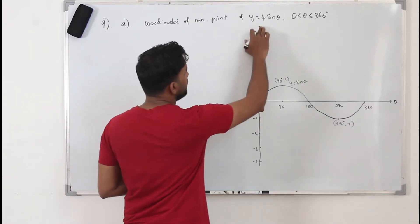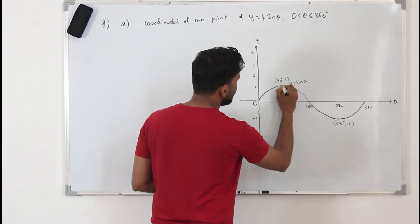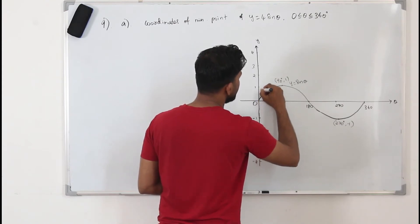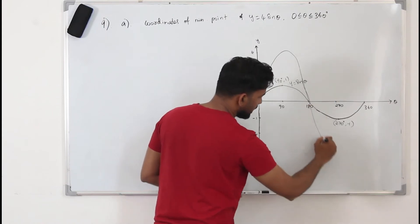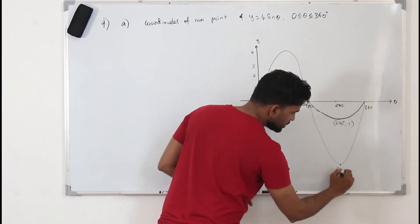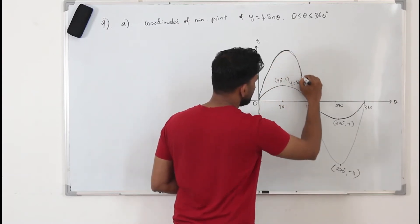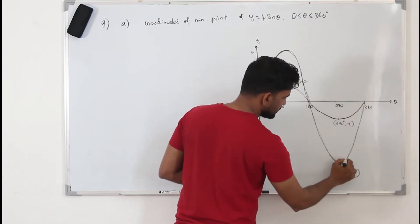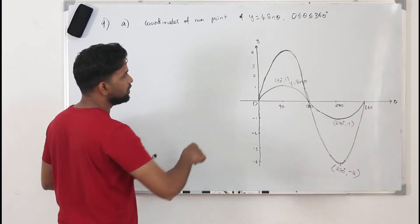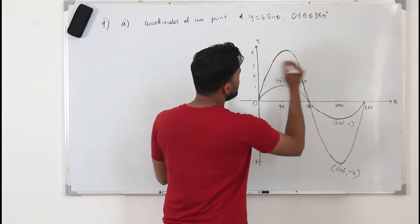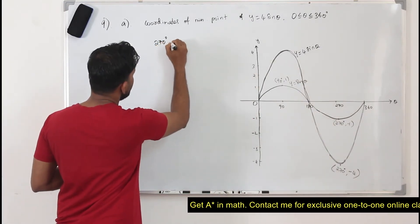When you multiply the function by 4, all the y-values are multiplied by 4. So the maximum value of 1 becomes 4, and the minimum value of -1 becomes -4. The minimum point is therefore at 270° — the x-coordinate stays the same — and the y-coordinate becomes -4. You can use decimals to verify this. You need to sketch this graph and label it as y = 4sinθ.